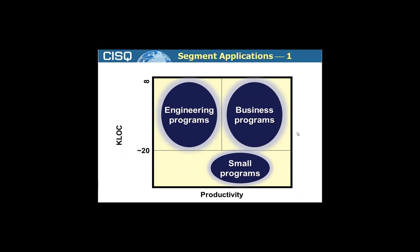We found those business programs to be much more productive than the engineering programs because, frankly, in some cases they didn't have the real-time component — they were less complex and less challenging from an engineering point of view. We also had programs, in some cases less than 20,000 lines of code, that did all kinds of small functions. Those were much more productive because we weren't trying to work with large, complex systems. So we really had to, at minimum, segment our productivity analyses into these three buckets to make any sense of it.